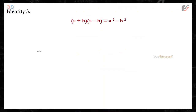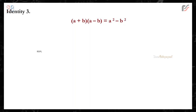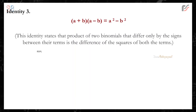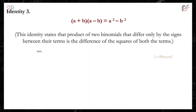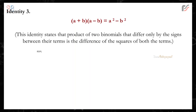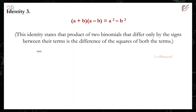Identity 3: (a + b)(a − b) is equal to a² − b². This identity states that the product of two binomials that differ only by the signs between their terms is the difference of the squares of both the terms.